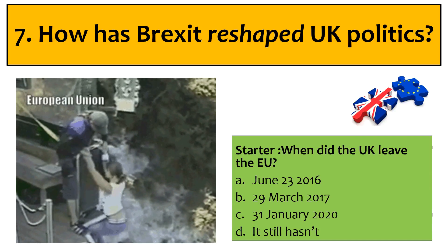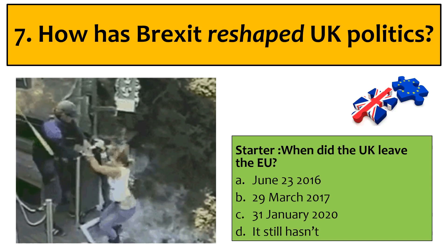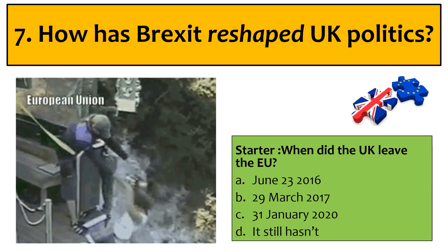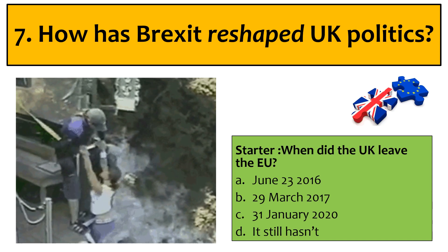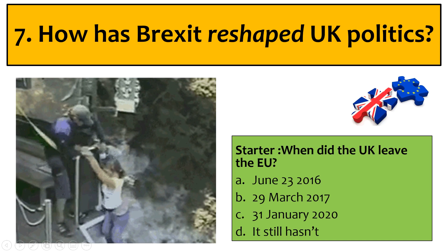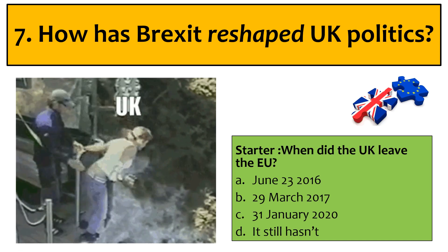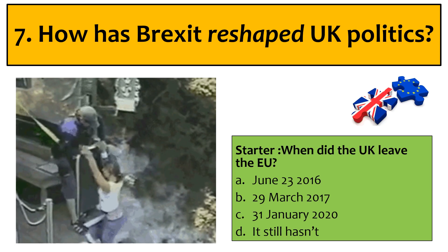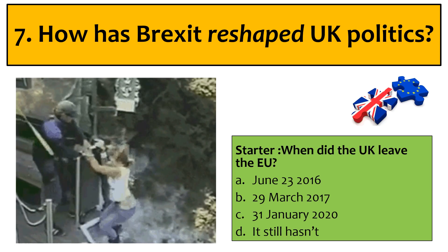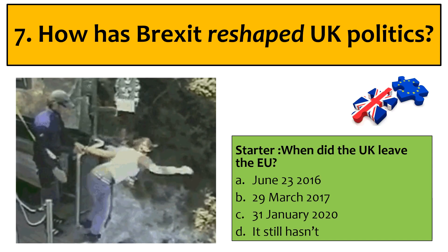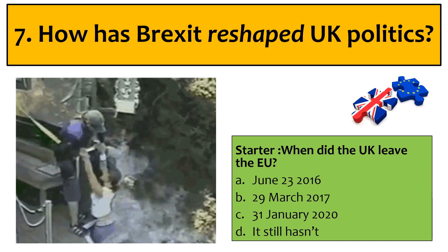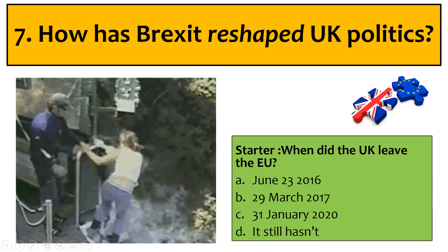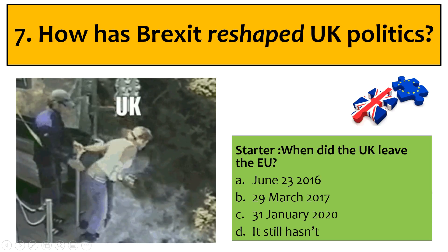There's a lot to talk about, but I want to get straight to the relevant part. The UK left the EU — when? That's the starter. Technically it left on the 31st of January 2020. However, it is part of a transition agreement. We are no longer members, but we are transitioning from being non-members, so in some sense we are still kind of weirdly in and out of the EU. We did not leave on the 23rd of June, and we did not leave on the 29th of March when Article 50 was triggered. We left on the 31st of January.